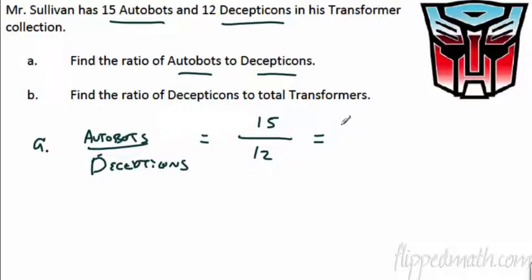Now we need to reduce. So 15 to 12, you can take a three out of both. We're going to call this what? Five over four. So it's five Autobots for every four Decepticons. So you give me four Decepticons, he actually has five Autobots for that. That's easy enough.